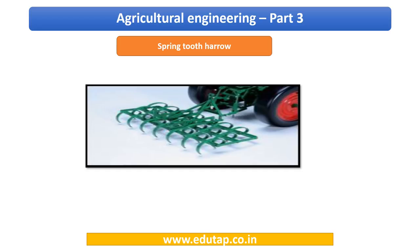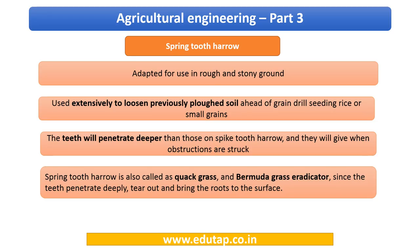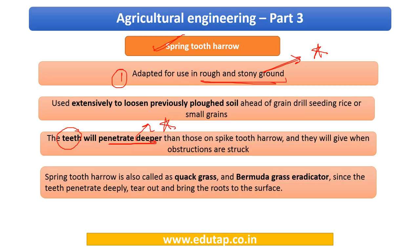The spring tooth harrow has spring-like tooth structures protruding, instead of the long rigid spikes of the spike tooth harrow. It is adopted for use in rough and stony ground. Compared to the spike tooth harrow, the teeth of the spring tooth harrow penetrate deeper — making it preferable where the ground is stony or hard. Other names for the spring tooth harrow include quack grass and bermuda grass eradicator.